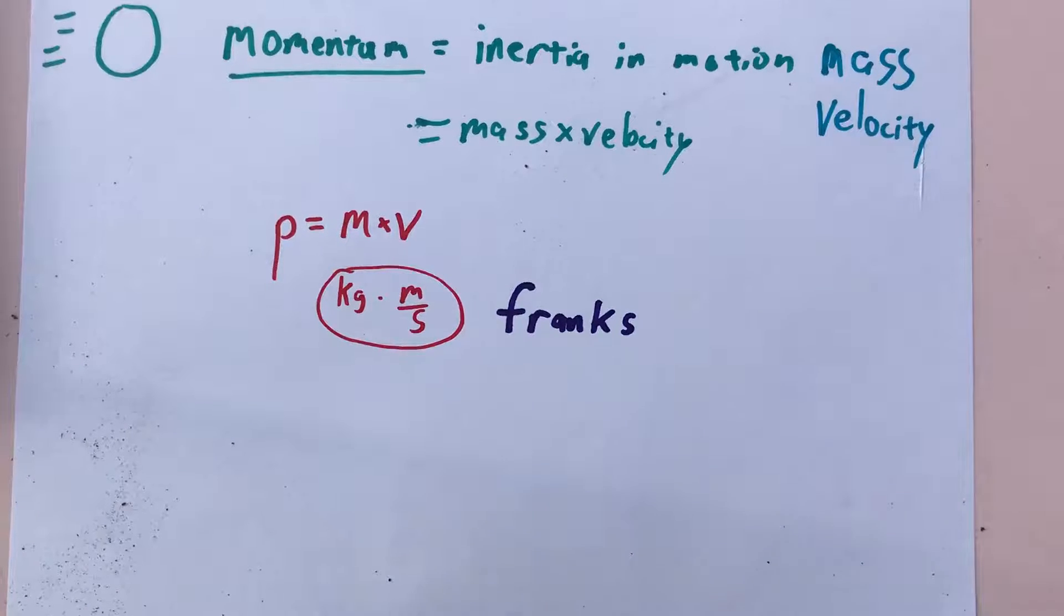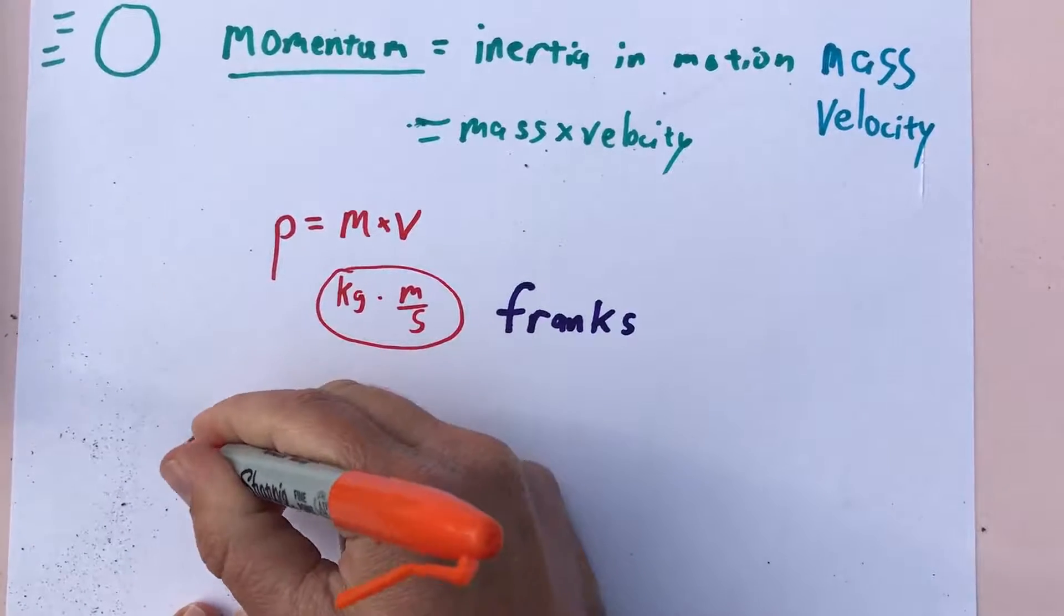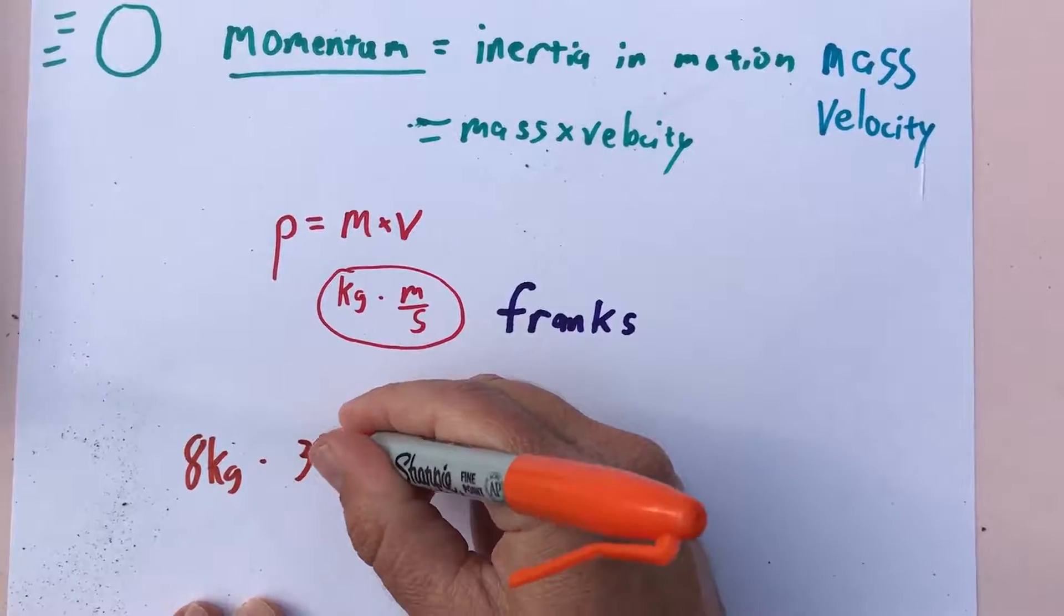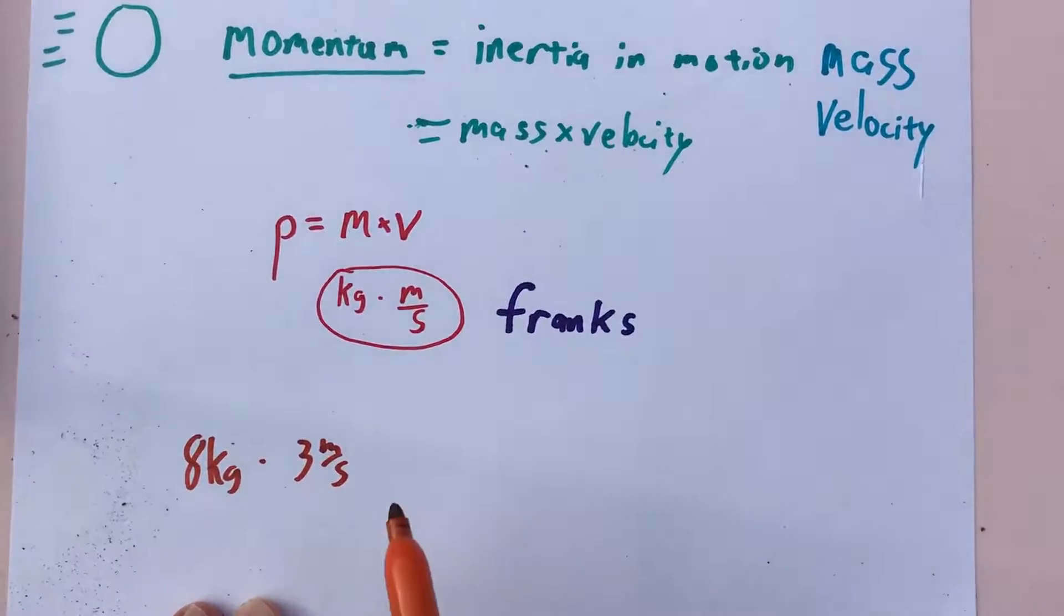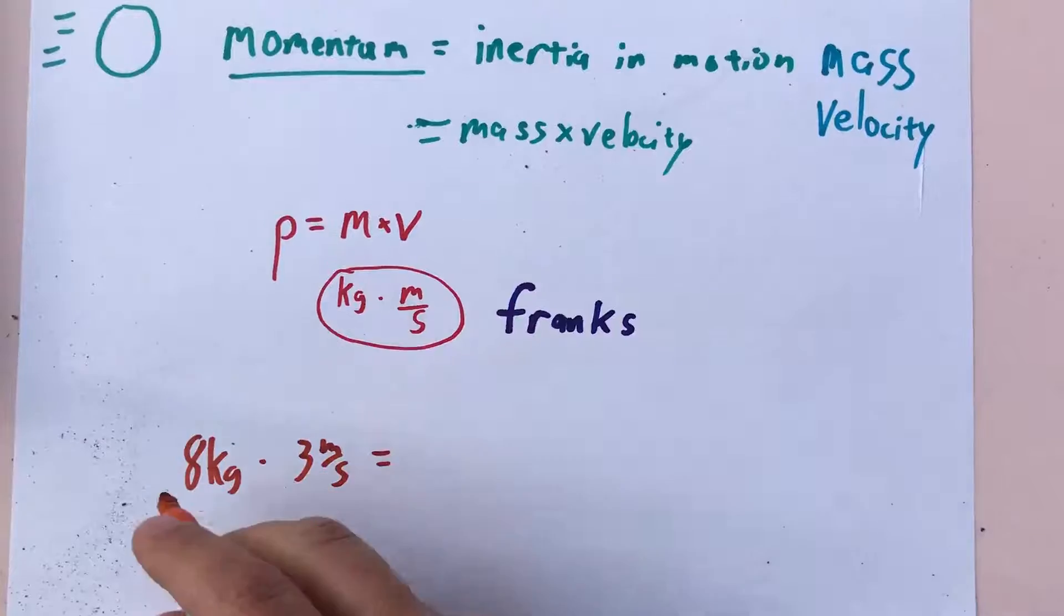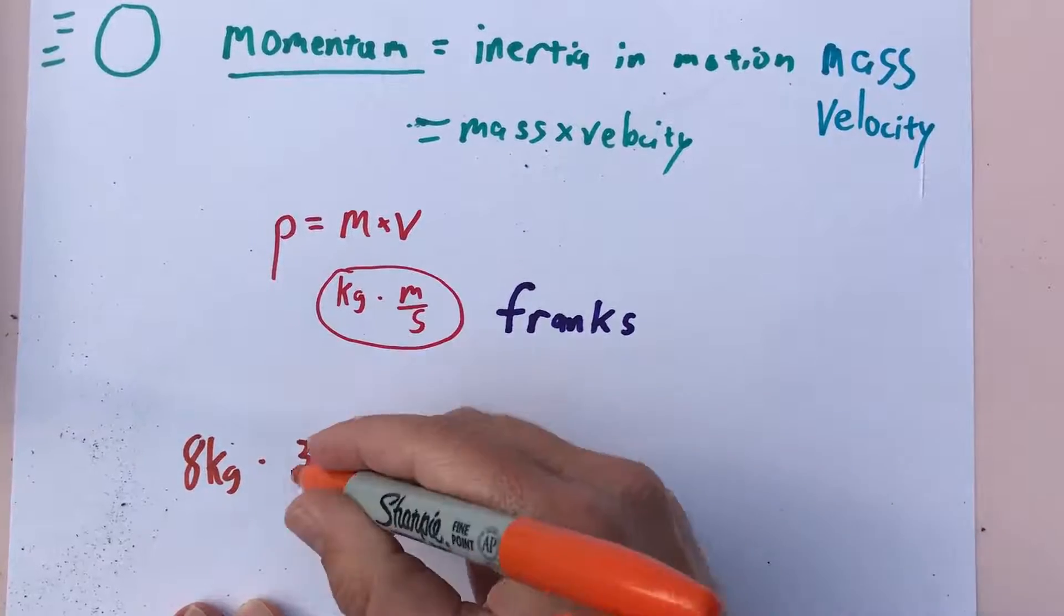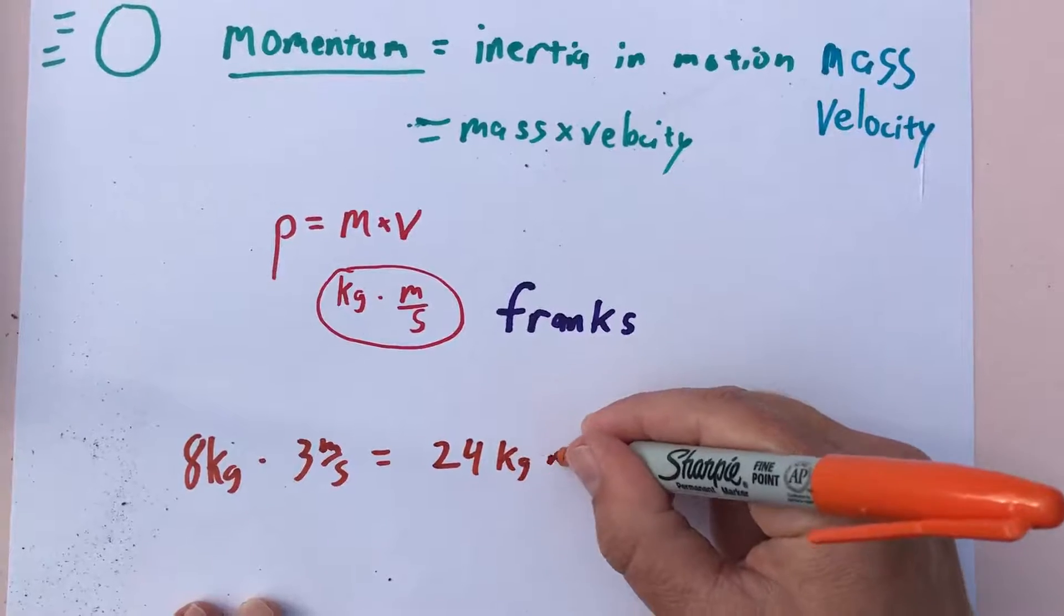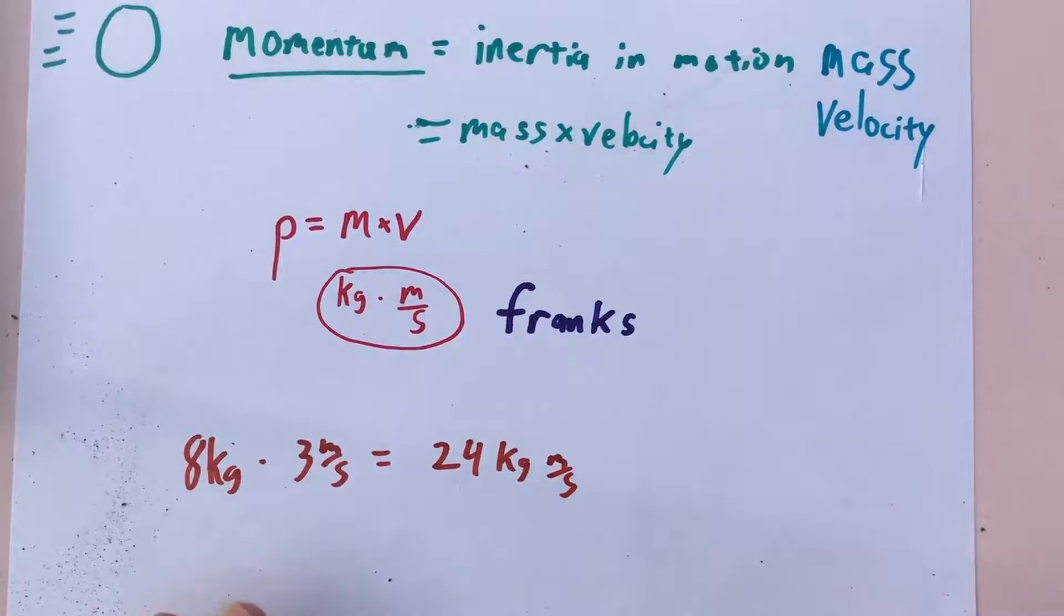So a real simple problem then would simply be, let's say you had something that was eight kilograms and it was going three meters per second. Well then to find the momentum you'd simply multiply those two, mass times velocity, so eight times three would be 24 kilogram meters per second of momentum.